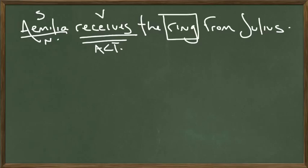The ring, which is being passed around in this sentence, is the direct object. It's in the accusative case. And she's receiving the ring from. From is a preposition, which puts this in a prepositional phrase. The other side of the prepositional phrase is Julius. He's the object of the preposition. From is a prepositional phrase that goes into the ablative case.